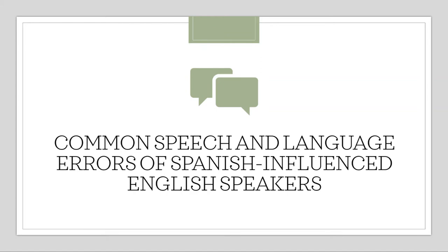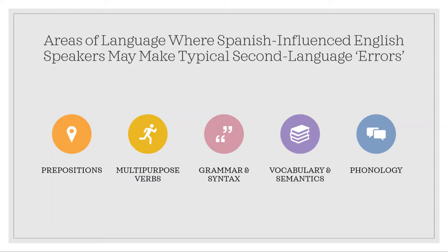I will now focus on the speech and language errors common to Spanish-influenced English speakers. As the number of Hispanics in the US grows, it would benefit us to have a basic understanding of typical patterns of second language acquisition and errors. This will help us understand which patterns in bilingual development are typical versus those that might indicate a language impairment, and will help us create goals for bilingual clients based on their language disorder rather than those geared toward correcting second language patterns. The five main areas where Spanish-influenced English speakers may make typical second language errors are prepositions, multi-purpose verbs, grammar and syntax, vocabulary and semantics, and phonology.